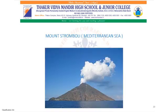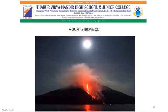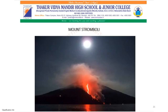Mount Stromboli, located in the Mediterranean Sea, is an example of an active volcano. Active volcanoes are those whose eruptions are regular, even in the present time. For example, Stromboli and Mount Fuji in Japan are active volcanoes. We can see Mount Stromboli with lava coming out through the vent-like structure.